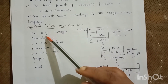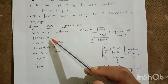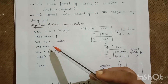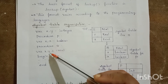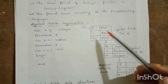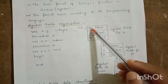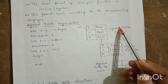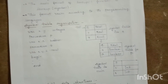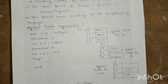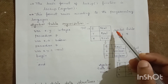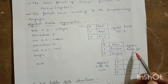For example, consider: var x, y are integers; procedure p with variable x, a as boolean; procedure q with variable x, y, z as real. This is how it is represented in the symbol table. At the top, we have the symbol table for procedure q, which contains variables x, y, z of type real.